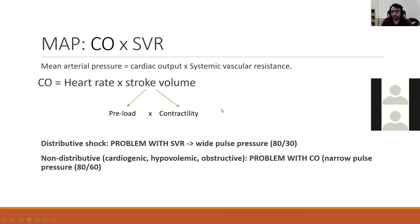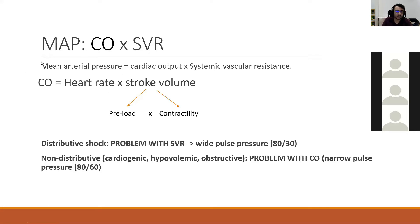This is an important equation to focus on: Mean Arterial Pressure equals Cardiac Output times Systemic Vascular Resistance. The reason I'm talking about this equation is that if you understand it, you will understand what shock is.